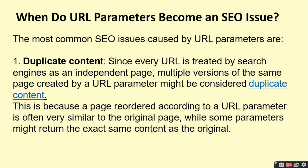The first reason is duplicate content. You have set a parameter on a type of page in your website, and then you use the page to parameterize. This creates duplicate content, because a page recorded according to a URL parameter is often very similar to the original page — some parameters might return the exact same content. Since every URL is treated by search engines as an independent page, multiple versions of the same page created by URL parameters might be considered duplicate content.